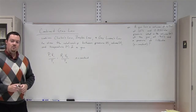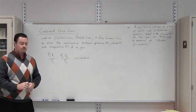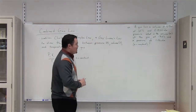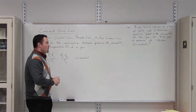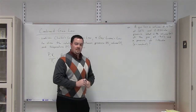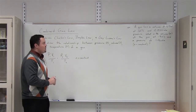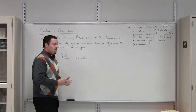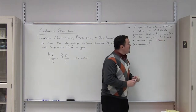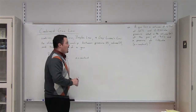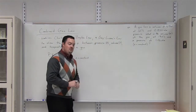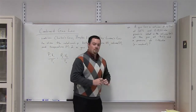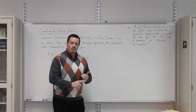Now, how do we use the combined gas law when given a problem which contains five of these six variables? Our example question tells us we have a gas with a volume of 675 milliliters, at 35 degrees Celsius and a pressure of 0.850 atmospheres. The temperature decreases to negative 95 degrees Celsius and the pressure increases to 1.06 atmospheres. We need to find the volume of the gas in condition 2.